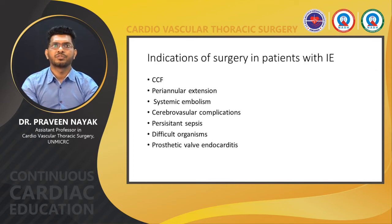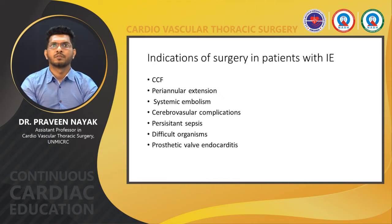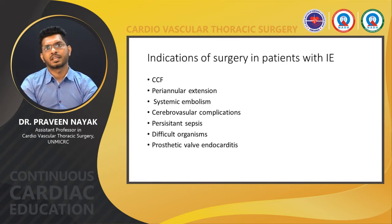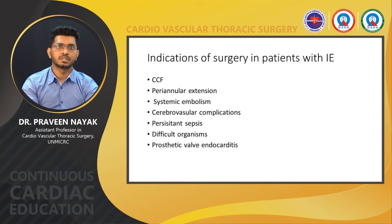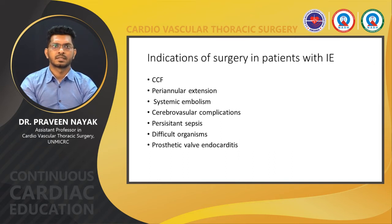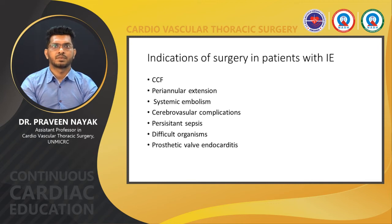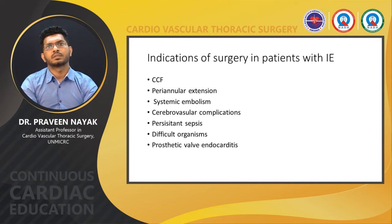Coming to the indications for surgery in infective endocarditis: surgery should be performed immediately, irrespective of antibiotic therapy, in patients with persistent pulmonary edema or cardiogenic shock. In other cases, if congestive heart failure disappears with medical therapy and there are no other surgical indications, interventions can be postponed to allow days or weeks of antibiotic treatment under careful clinical and echocardiographic observation. In patients with well-tolerated severe valvular regurgitation or prosthetic valve dehiscence and no other reason for surgery, conservative therapy is recommended. Surgery for prevention of embolism must be performed very early, since embolic risk is highest during the first few days of therapy.